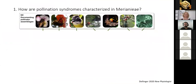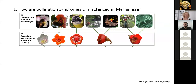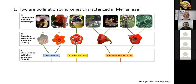To characterize syndromes we first have to know the actual pollinators. At the beginning of my PhD I did a lot of field work in Ecuador and Costa Rica to document as many pollinators for as many species as I could, then recorded system-specific floral traits for those species — always with the aim of finding traits that would indicate convergence to specific pollinator groups — and then circumscribed the different syndromes.